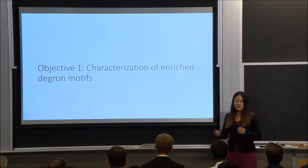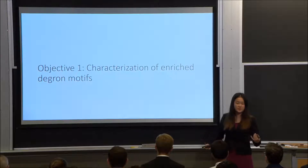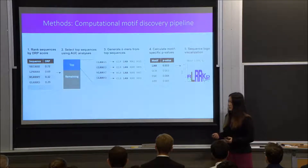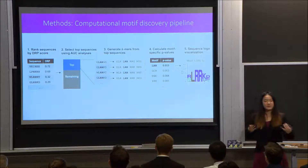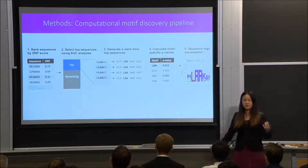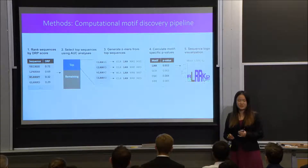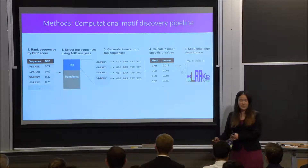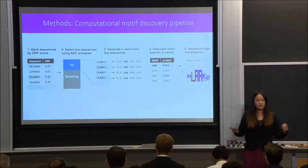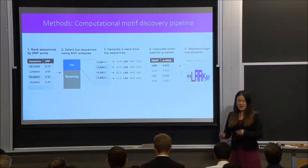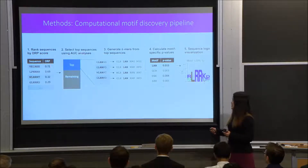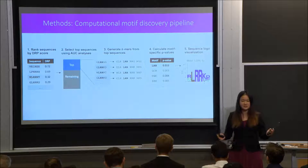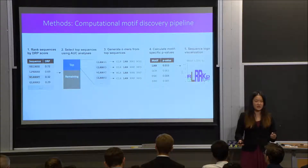Our first objective was to characterize the degron motifs learned by the deep degron model. We implemented a five-step computational pipeline. In the first step, we ranked 16,000 protein sequences based on the DRP scores given by the deep degron model. Once we ranked the sequences, we employed AUC analyses to determine which of the top sequences had the potential to contain a degron, determining that the top 1,860 sequences had that potential.